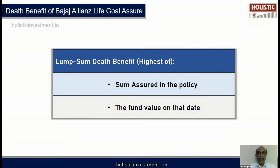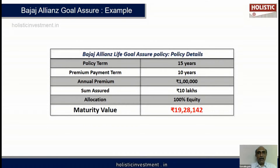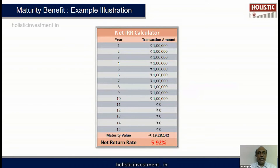For the maturity benefit - if you survive - let us take an example. You take a policy term of 15 years and pay premium for 10 years, meaning you wait 5 years and receive the maturity value on the 15th year. If you choose 100% equity allocation, the expected maturity value is approximately 19.28 lakhs, paying 1 lakh premium every year for 10 years.